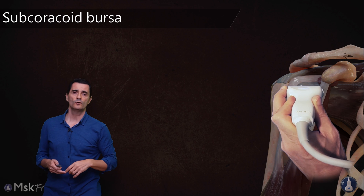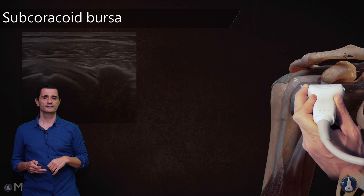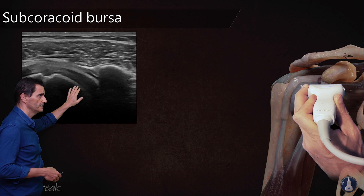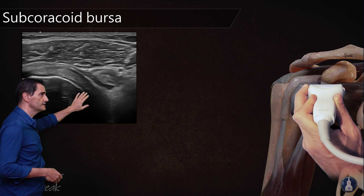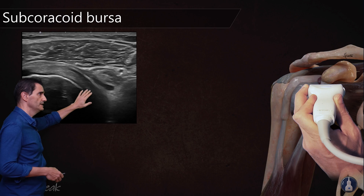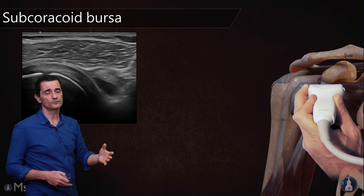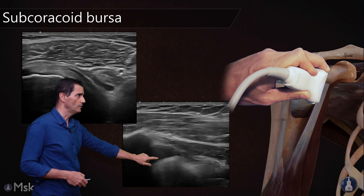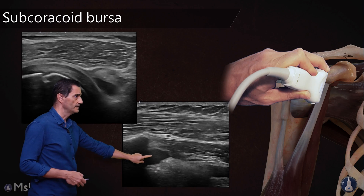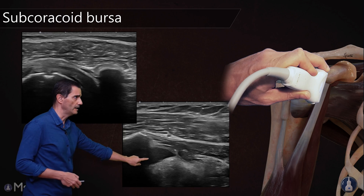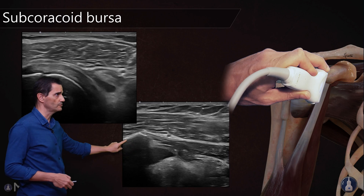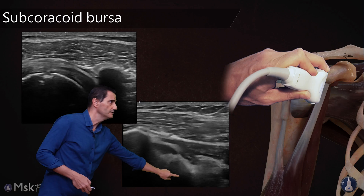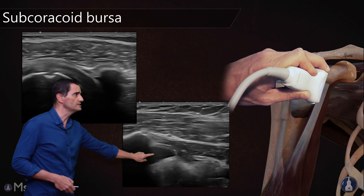If we place the probe and go over the coracoid process, we will see this small amount of fluid here. If we continue distal, this fluid disappears — it's no longer anterior to the subscapularis. In this long axis view, you can see a better view of the bursa going deep under the coracoid process. This is the coracoid process, this is the coracobrachialis muscle, and this will be the subscapularis over there. The bursa is located here.